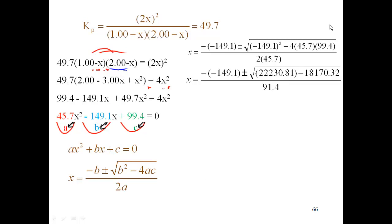I'll take the negative 149.1 squared and I get 22,230.81. I'll take the 4 times 45.7 times 99.4. I get 18,170.32. Continuing on under the radical, I'll take those two numbers and I get 4,060.49.